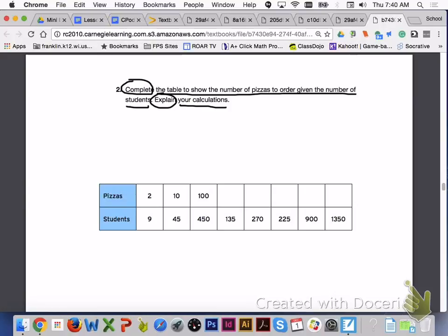Turn to page 347. Please answer number 2 with your group members. Explaining your calculations will be drawing the arrows in your ratio table to show how you determined the equivalent ratios.